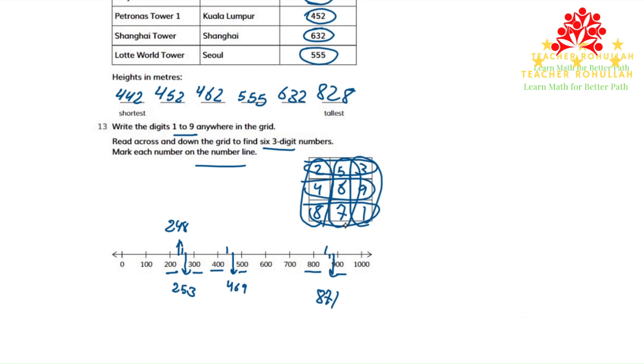The second number down is 567. 567 is between 500 and 600. So 550 is halfway between them. And 567 can be over here. So 567.